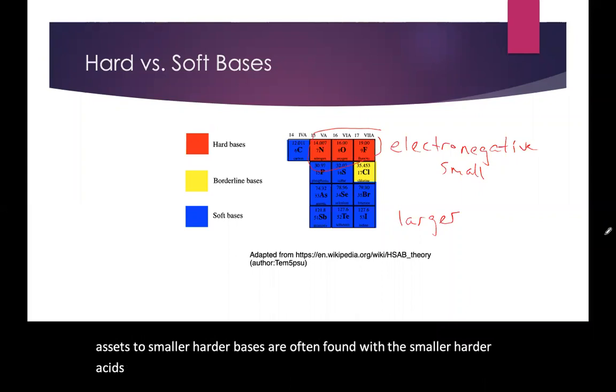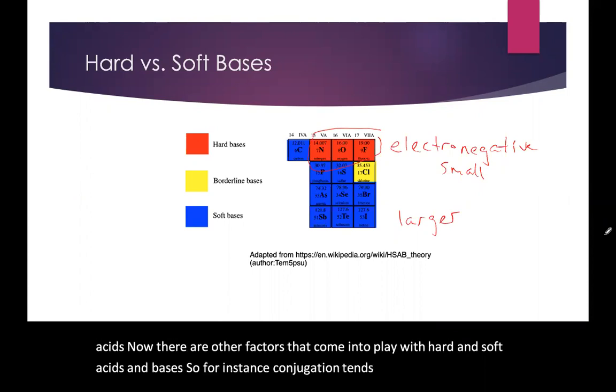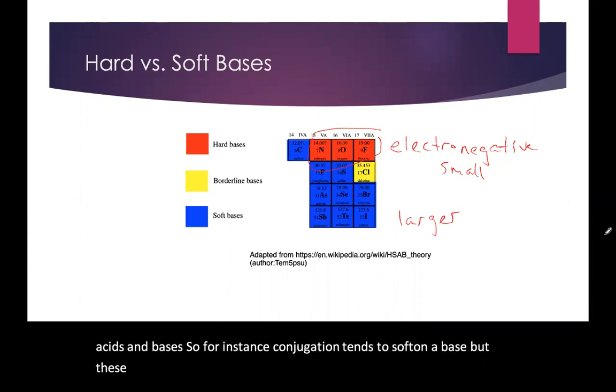Now there are other factors that come into play with hard and soft acids and bases. So for instance, conjugation tends to soften a base. But these are the basics that we'll start with right now.